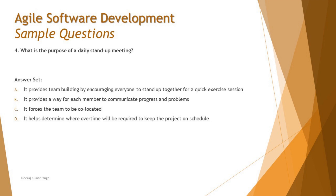Option C says it forces the team to be co-located. That's not correct — co-location is a choice to enable better collaboration and face-to-face conversation; it's one of the agile principles, but the daily stand-up is not about forcing co-location. Option D says it helps determine where overtime will be required to keep the project on schedule.